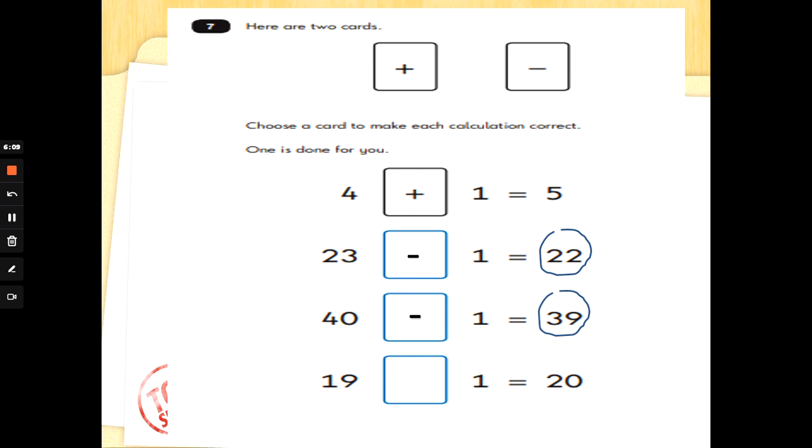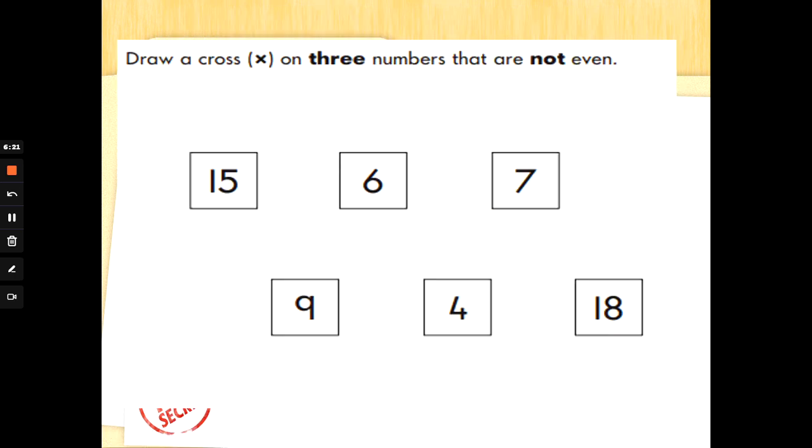Then we've got 19 something one and 20. Ah, 20 is bigger than the number we started with, so that one would be an add, wouldn't it? Well done if you got those.